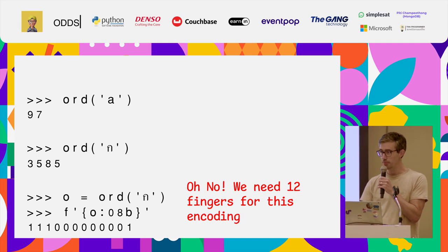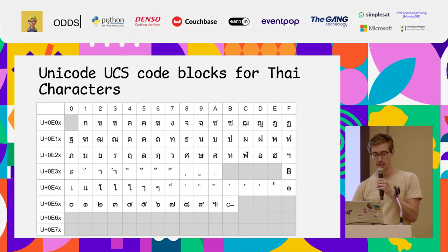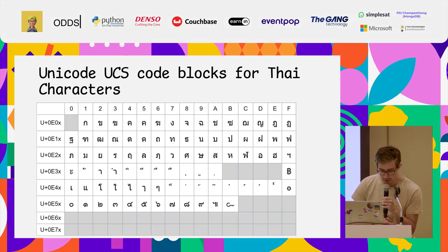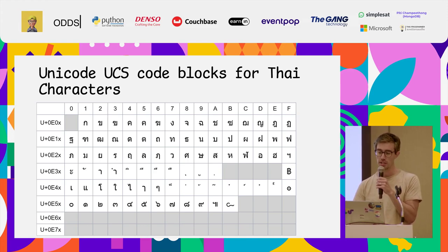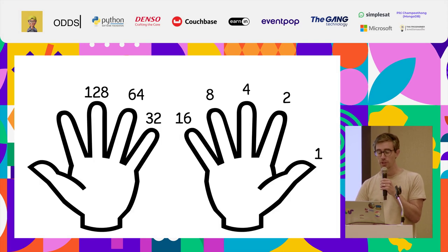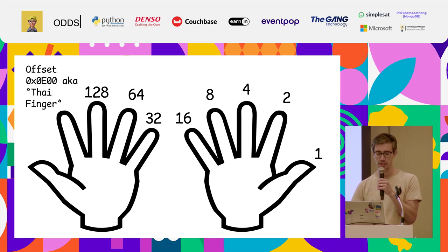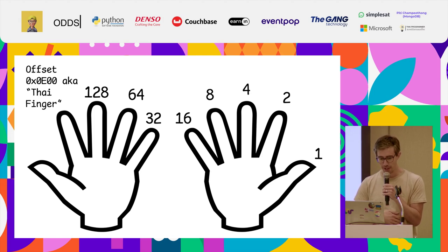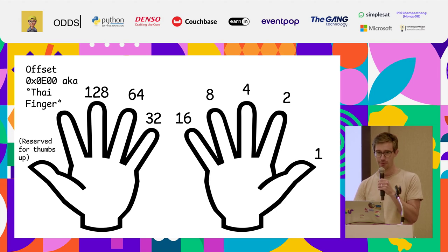The Unicode encoding for Thai characters starts at 0E00. My suggestion is that we introduce UTF-9, where we build on an 8-bit encoding for UTF-8, but we use the ninth finger as an offset for 0E00 — we just call that the Thai finger. We're left with one extra bit, which we can keep for any thumbs up we might want to do.